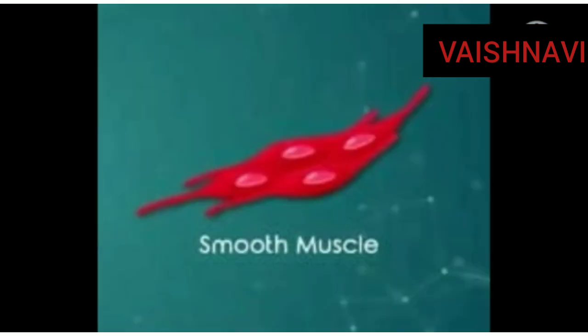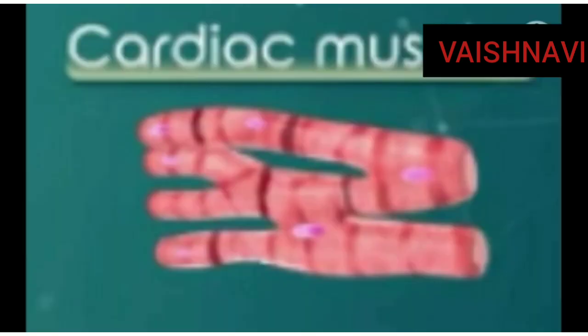Second one is non-striated muscles. These muscles are involuntary in nature. These muscles are mostly present in the alimentary canal, uterus, etc. They are called smooth muscles. They are present in the iris of the eyes, uterus, etc.